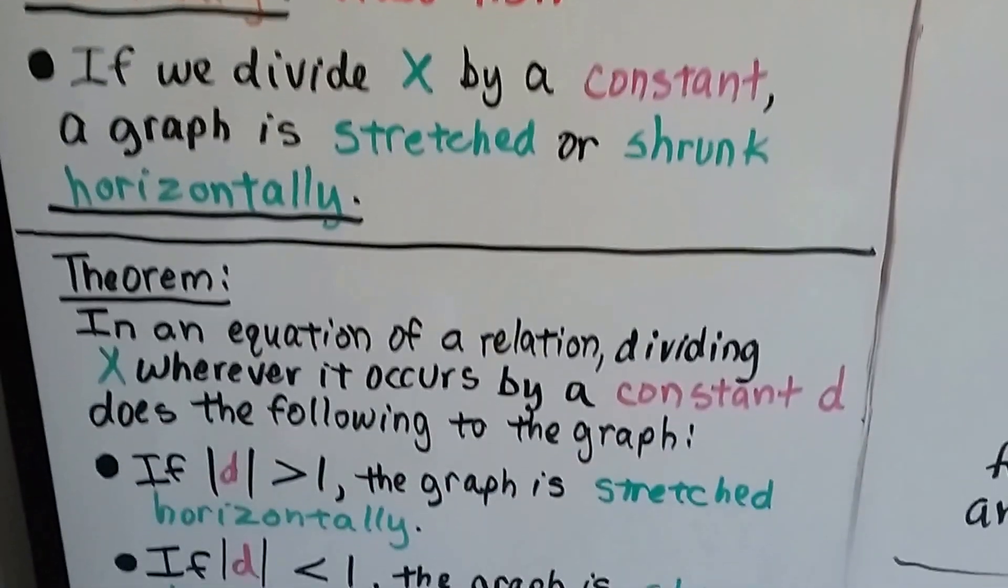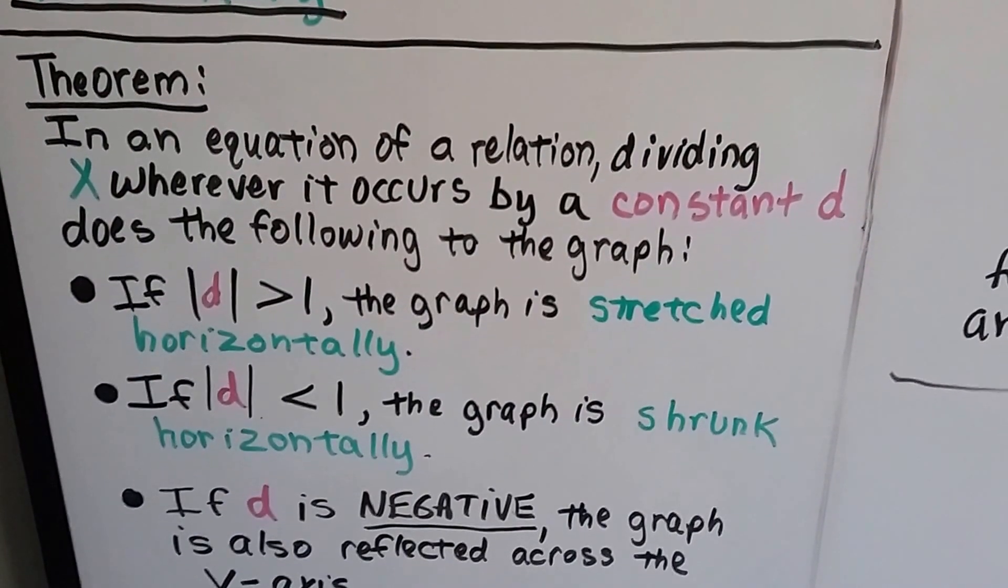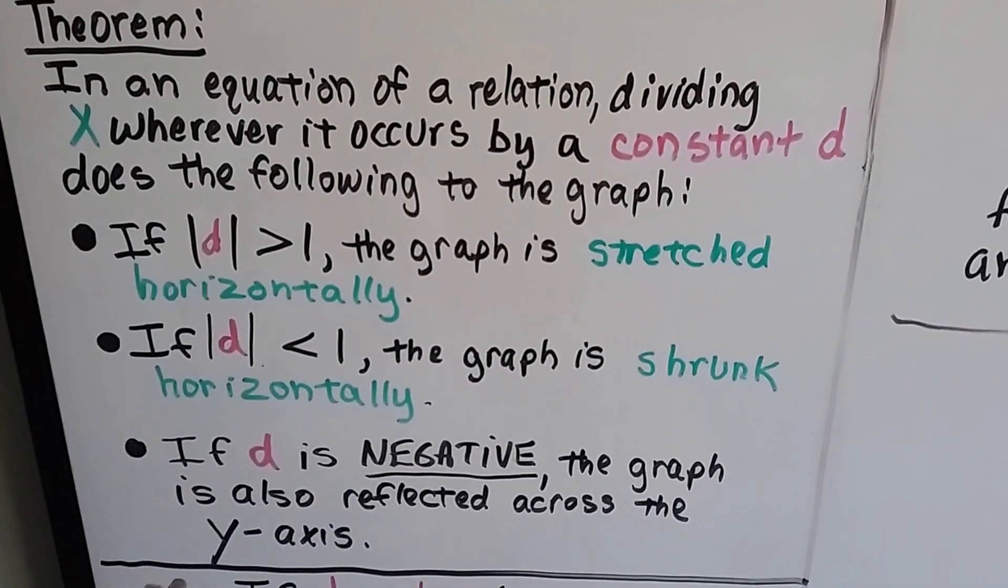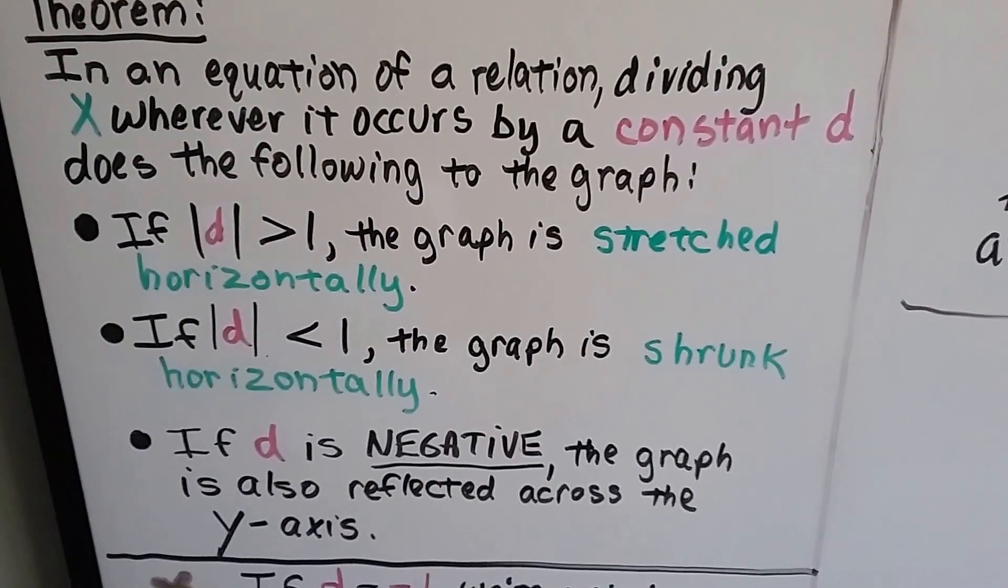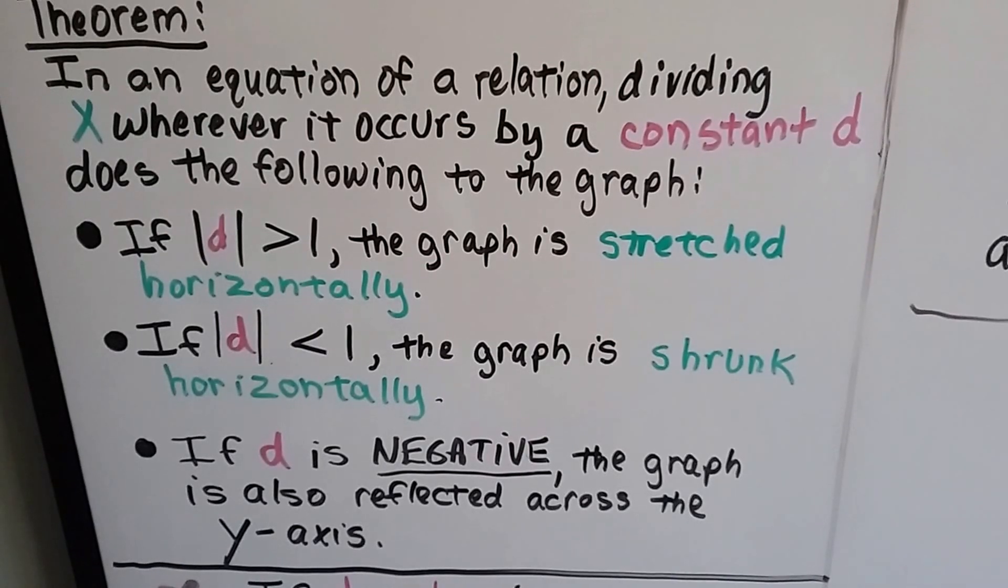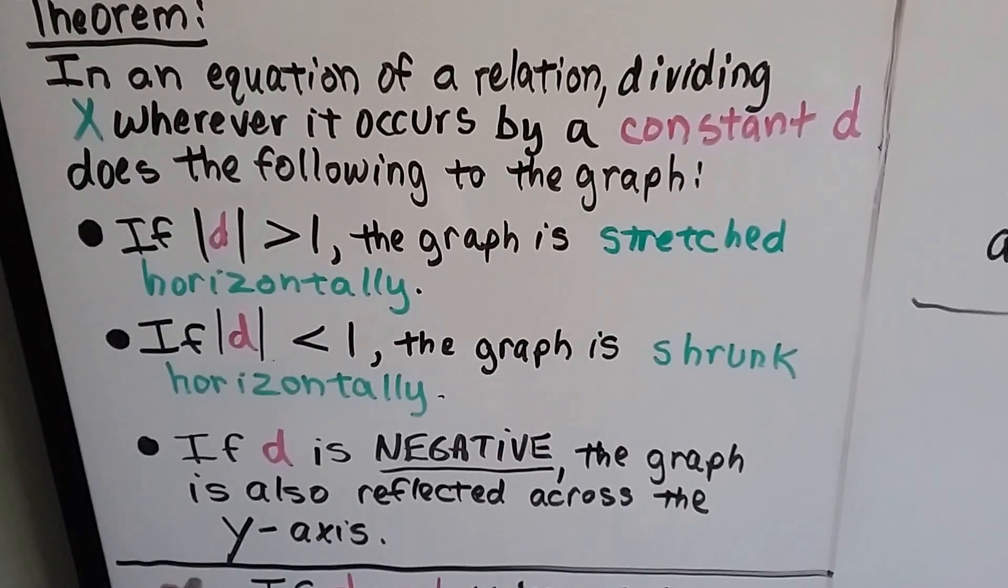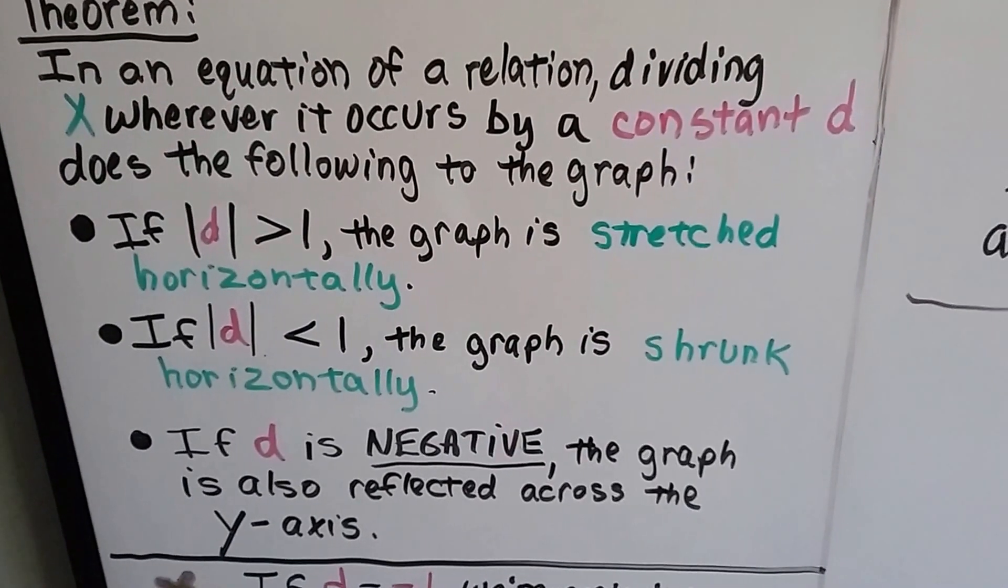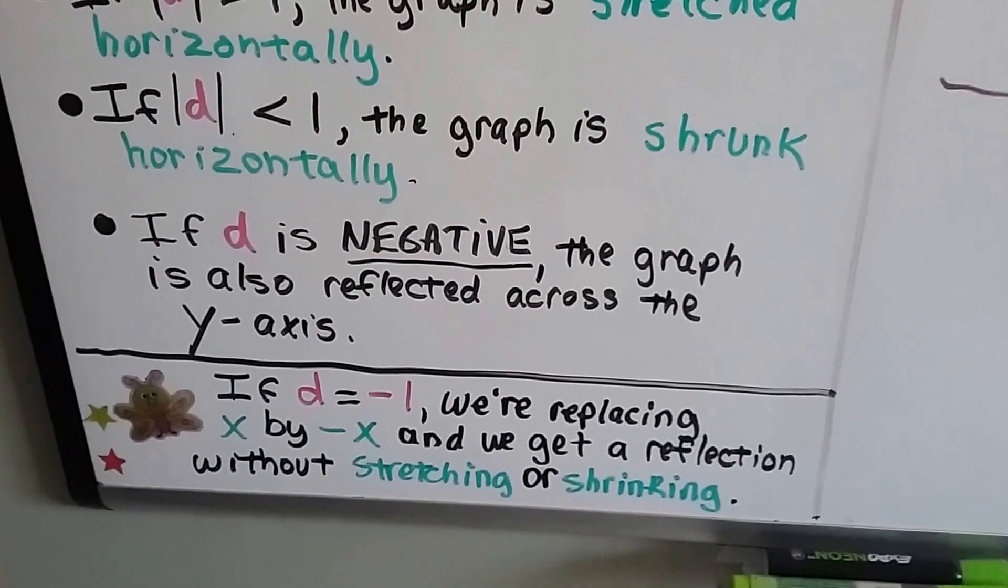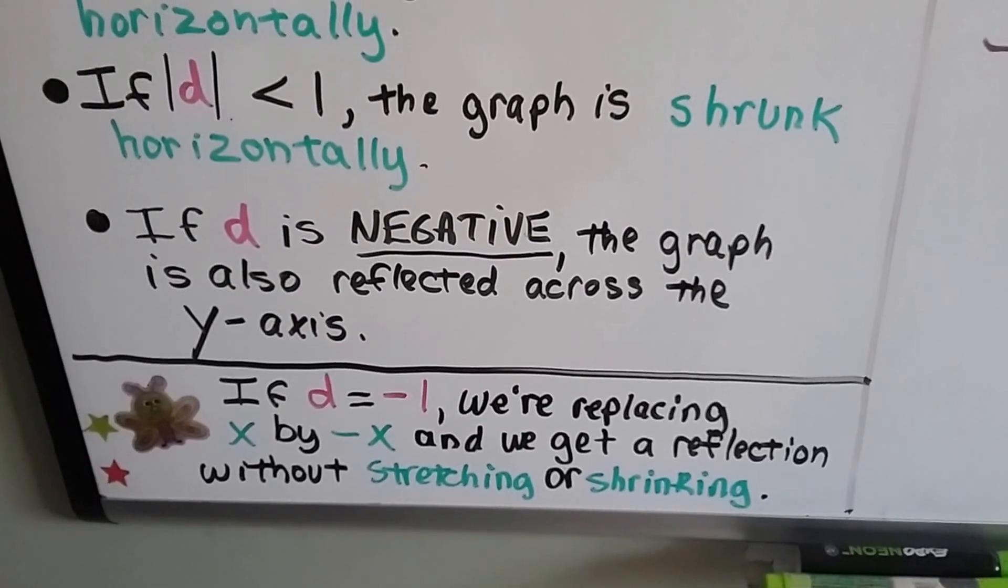So here's our theorem. In an equation of a relation dividing x, wherever it occurs in that equation by a constant d, does the following to a graph. If the absolute value of d is greater than 1, the graph is stretched horizontally. And if the absolute value of d is less than 1, it's shrunk horizontally. And if d is negative, the graph is also reflected across the y-axis. And if d is negative 1, we're replacing x by negative x, and we get a reflection without stretching or shrinking.